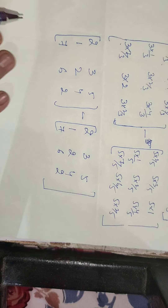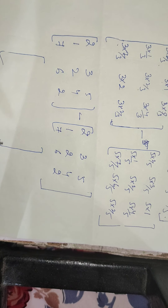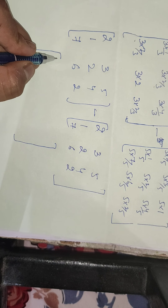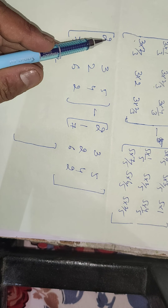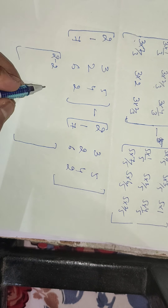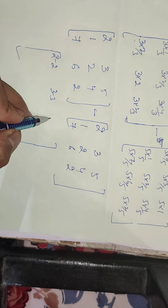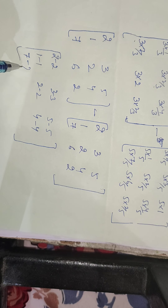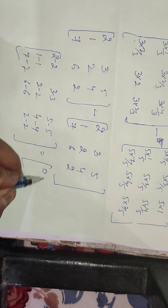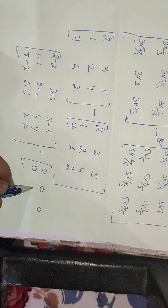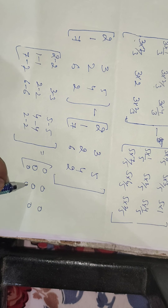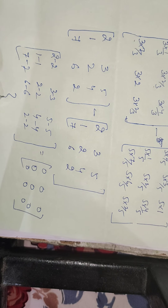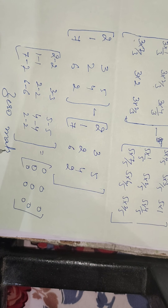Now we perform the subtraction. Each element corresponds to its position: 2 minus 2, 3 minus 3, 5 minus 5, 1 minus 1, 2 minus 2, 4 minus 4, 7 minus 7, 6 minus 6, 2 minus 2. All the elements are 0, so this is the zero matrix.